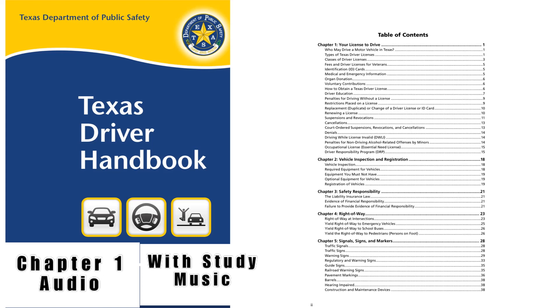Examinations: Before any exams are given, you must pay the required fee. Your picture will be taken and you will be given a payment receipt. If you do not pass the knowledge and driving exams on your first attempt, your application will be held for 90 days. After 90 days or 3 failed exams, a new application and fee will be required. The knowledge and driving exams are not required for applicants 18 years of age and older who surrender a valid out-of-state license. After you have passed all applicable exams, you will be issued a temporary license which you may use for 45 days or until you receive your permanent license in the mail. If you do not receive your license in 45 days, contact our Customer Service Center at 512-424-2600 or www.dps.texas.gov.